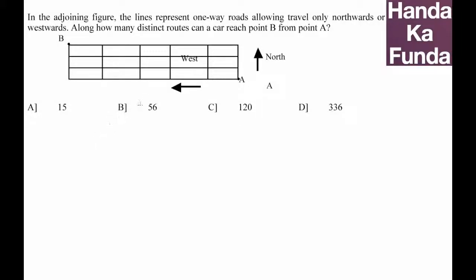Hi, in this particular question we are given lines representing one-way roads and we have to travel from point A to point B. Now to solve this question there are a couple of ways. One way, let me call this method number one: how many times do we have to go west? One, two, three, four, five. And we need to go north thrice. So we need to make five west movements and three north movements.